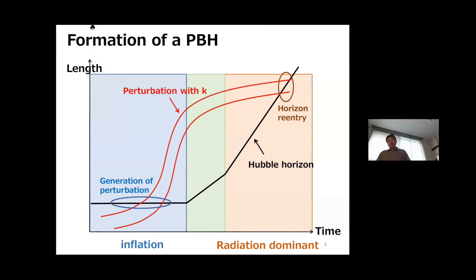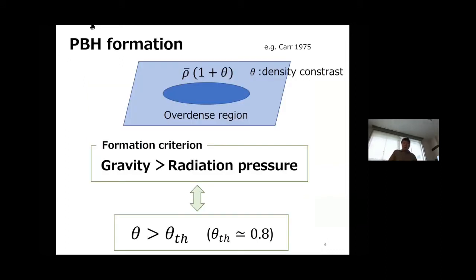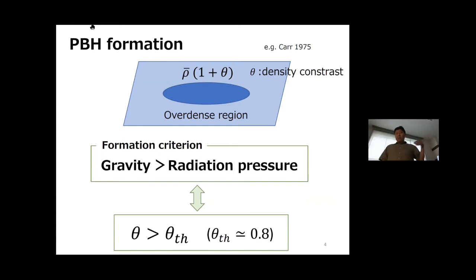After inflation, the Hubble horizon starts to increase, and the perturbations which were initially on super-Hubble scales re-enter the Hubble horizon later in the radiation-dominated universe. Now let's consider an overdense region which was initially on super-Hubble scales. Here, rho-bar is the average energy density and theta represents the density contrast. I use theta instead of the usual delta to avoid confusion with the delta function I will introduce later.